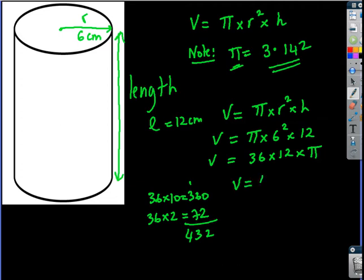So the volume is equal to 432π. Now, the last thing you need to remember is the unit. The unit is going to be cm³. So the answer to this problem is the volume is equal to 432π cm³.